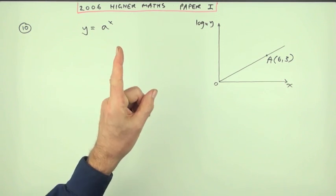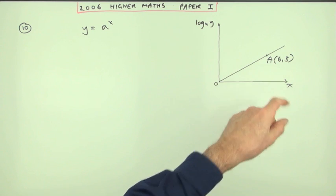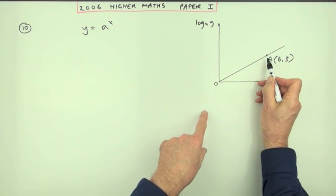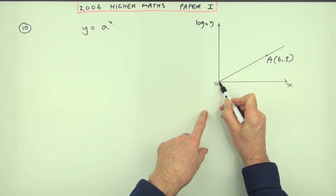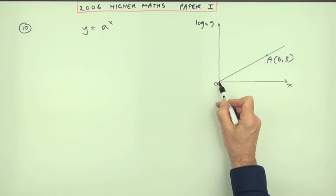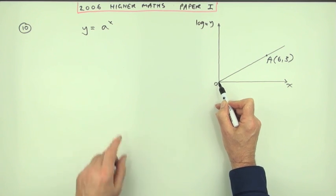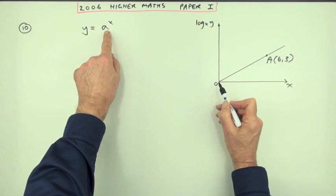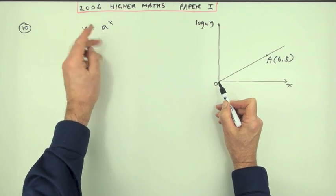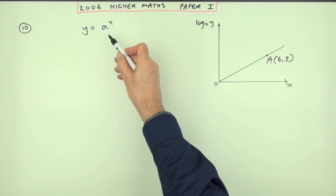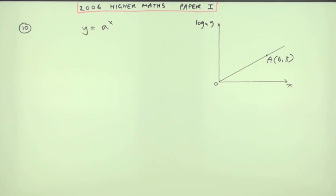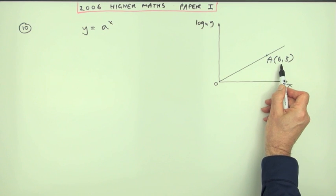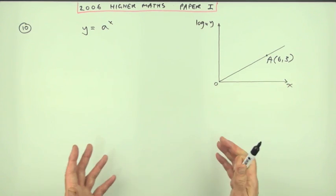However, here it's easy because it's only one unknown. That means I need one pair of values, one point on this graph. Notice there are actually two points though - there's this point (0,0). However, that's no use to you because if x is zero, anything to the power zero is one. In which case you lose a - doesn't matter what a is.